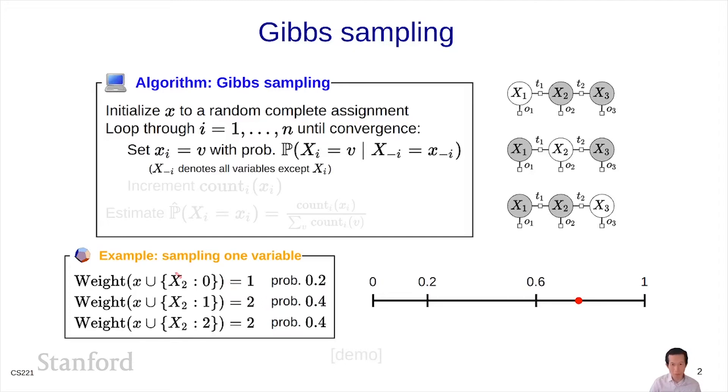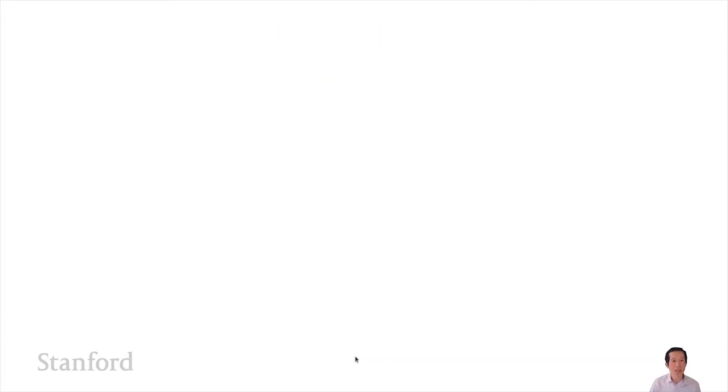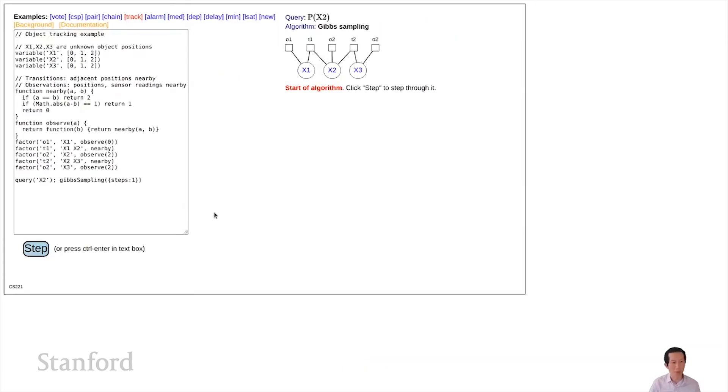That produces a sequence of samples of the assignments, and the main remaining thing to do is aggregate them. Every time I go through this loop, I'm going to increment a counter for variable i of the particular value that I saw. At the very end, I'm going to compute an estimate p hat of xi equals little xi. This is going to be simply the normalized version of the count, the relative frequency of seeing a particular value of little xi compared to everything else I've seen. There's a lot of counting and normalizing.